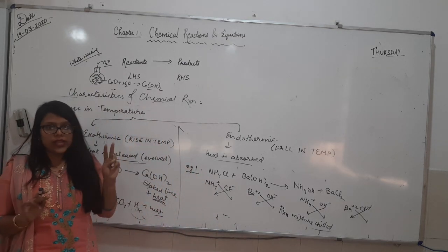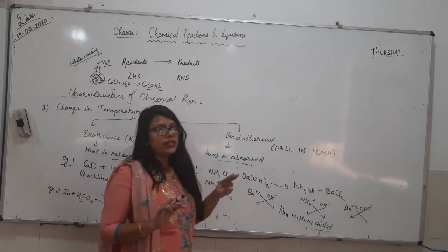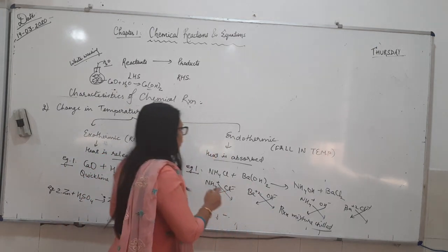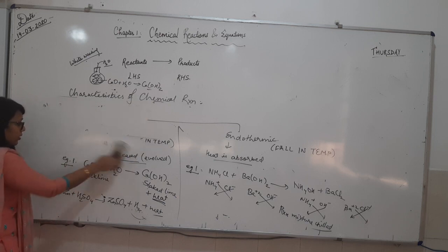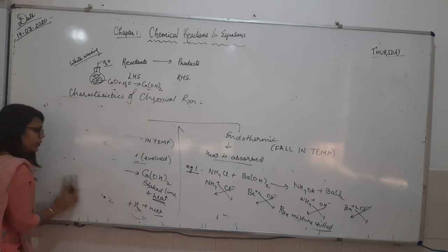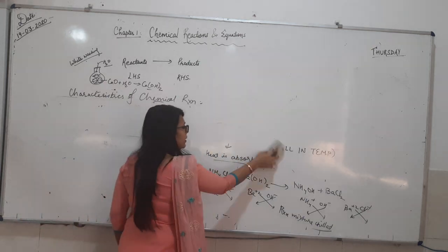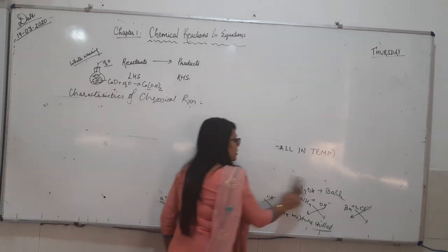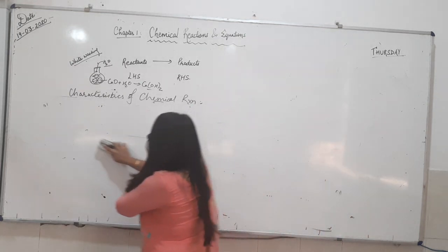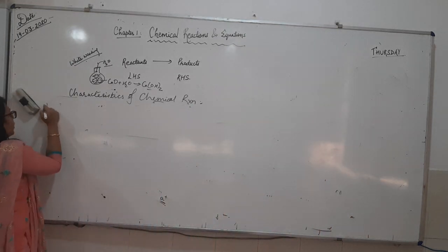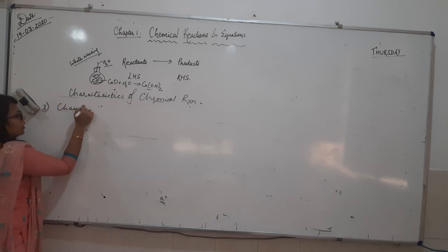Quick revision: Change in temperature can be of two types. First is exothermic — heat is evolved or released, with rise in temperature. Second is endothermic — heat is absorbed, with fall in temperature. Those were the first two characteristics: evolution of gas and change in temperature. Now, moving forward, the third characteristic is change in colour.